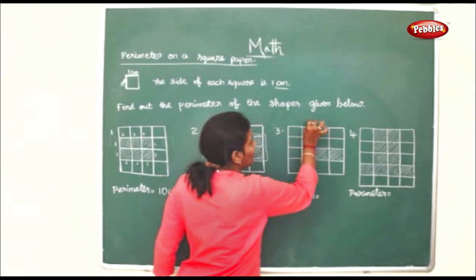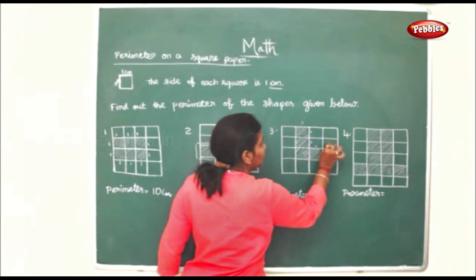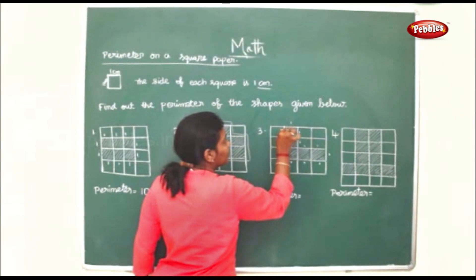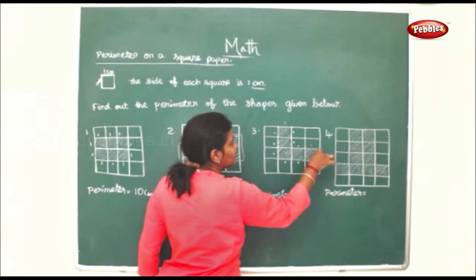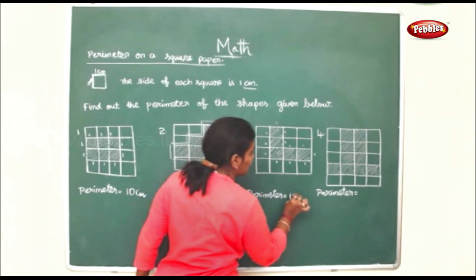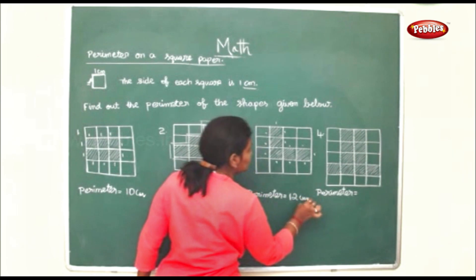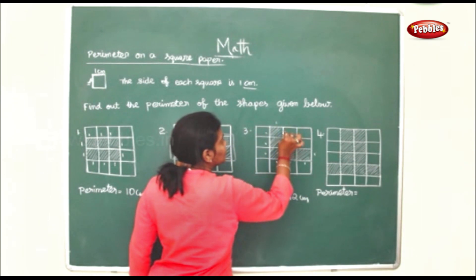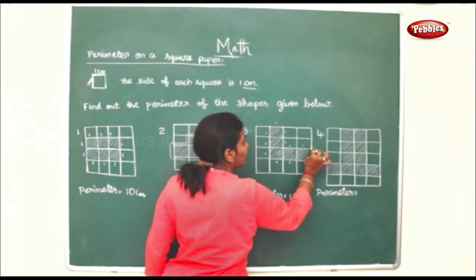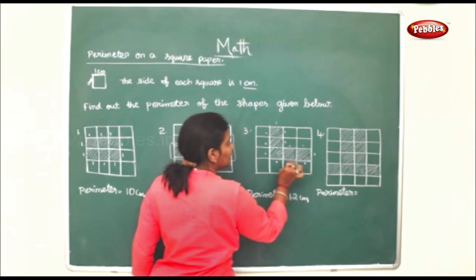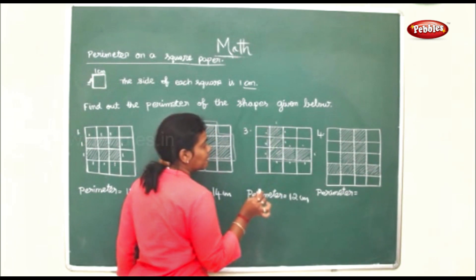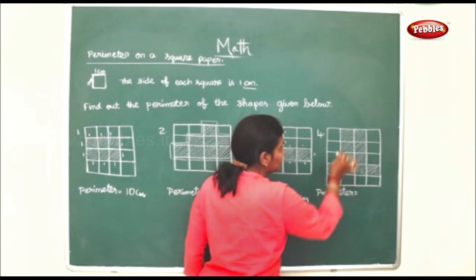For the next shape on the grid, counting each side: 1, 2, 3, 4, 5, 6, 7, 8, 9, 10, 11, 12. You can count like this too and you will find the same result. Counting again: 1, 2, 3, 4, 5, 6, 7, 8, 9, 10, 11, 12. The perimeter is 12 cm.